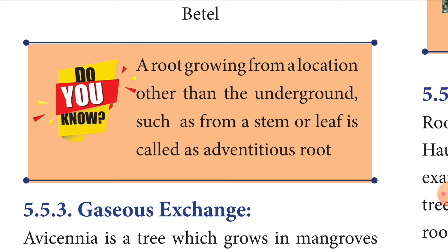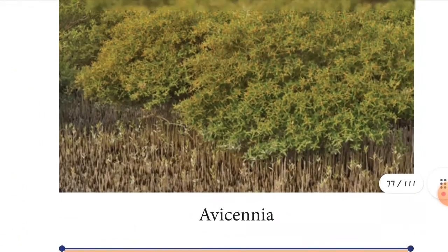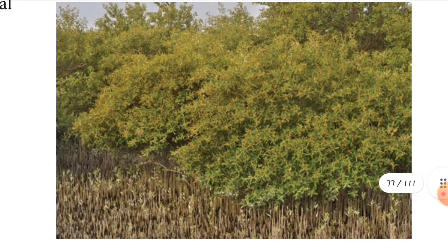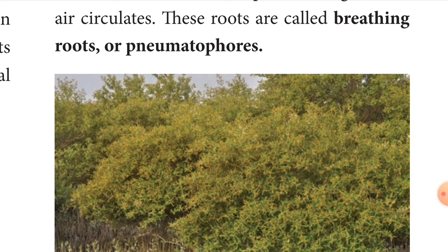Next we are going to learn gaseous exchange. Gaseous exchange means the plant takes in oxygen and gives out carbon dioxide. The tree named Avicinia grows in mangroves or swamps. Its roots are seen above the ground for the purpose of gaseous exchange. These roots are erect and have numerous pores, and are called breathing roots or pneumatophores.